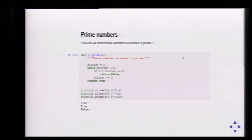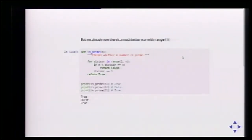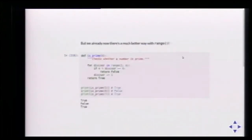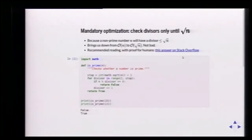Prime numbers. How do we determine if a number is prime? A prime number only has two divisors — one and itself. I'll try all possible numbers — if there's at least one divisor, you're not prime, otherwise you are. We don't have to do it the ugly way by hand; we use range to loop elegantly over all the candidate divisors. And there's a mandatory optimization: we only have to check divisors up to the square root.